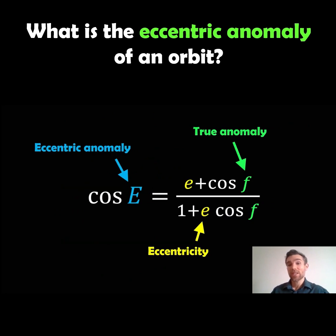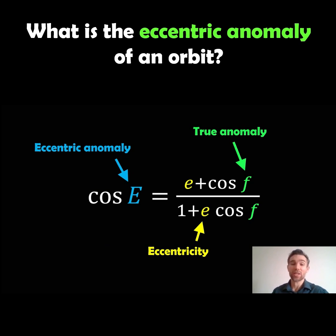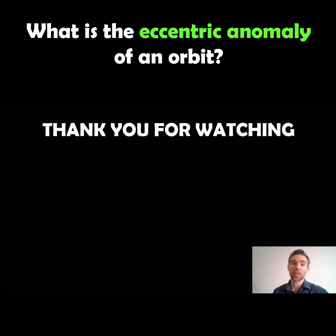How do we actually calculate the eccentric anomaly? Well, if you know the true anomaly — either as a given value or calculated another way — and you also know the eccentricity, then you can calculate the eccentric anomaly of the actual orbit. There are a few ways you could do that, but this is probably one approach you could use if you have that information available.